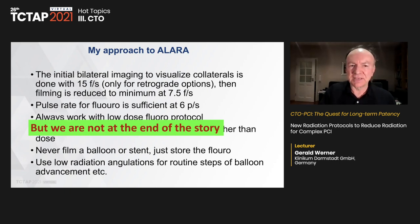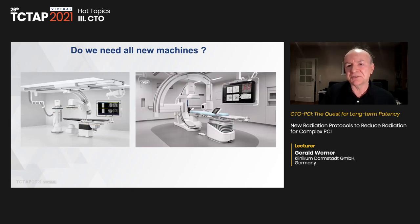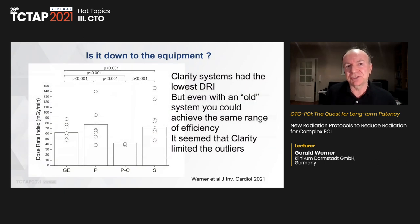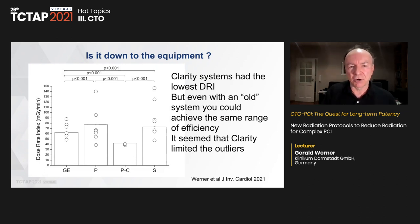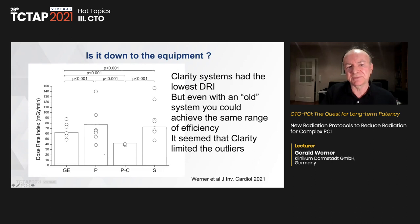On occupational dose: reducing patient dose also reduces operator dose. However, a recent paper showed potentially more scatter with low-dose settings compared to regular dose, though this is negligible with modern shielding techniques. Those operators worked at around 1.2 Gy — double the range we currently use. New operator protection is coming: the zero-gravity system was one of the first, and recently at the CTO summit in New York, a new shielding technique allowed the operator to work without a personal lead apron.